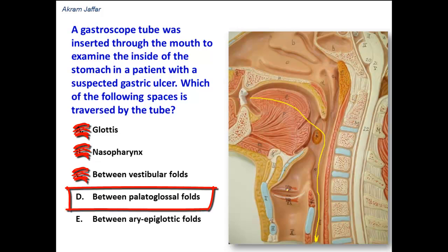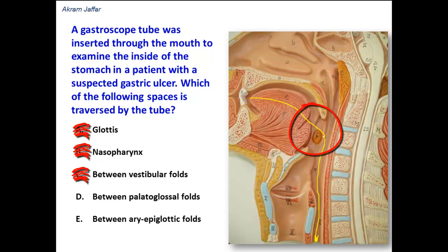Between the palatoglossal folds: these are part of the oropharynx. The palatoglossal and palatopharyngeal folds flank the tonsillar fossa, and the tube passes in between the palatoglossal folds — one fold on each side. This is the correct answer. If the option were between the palatopharyngeal folds, that would also be correct.